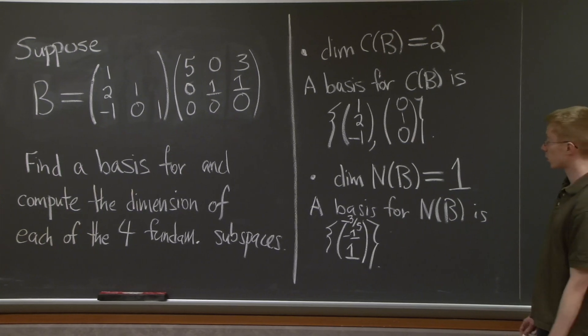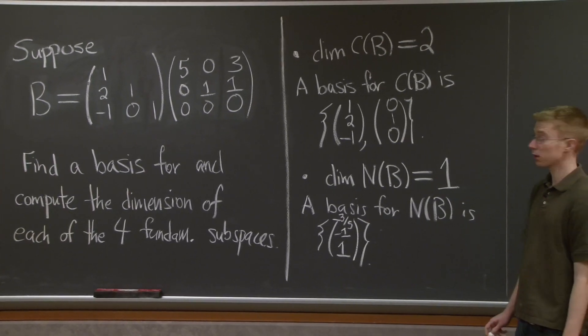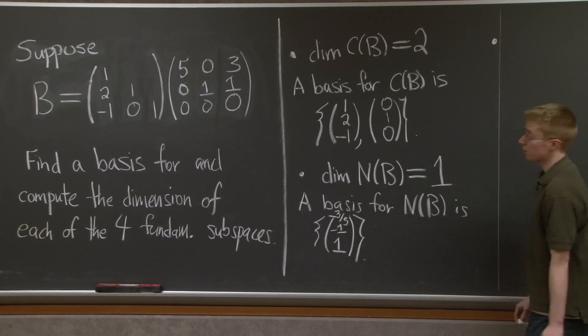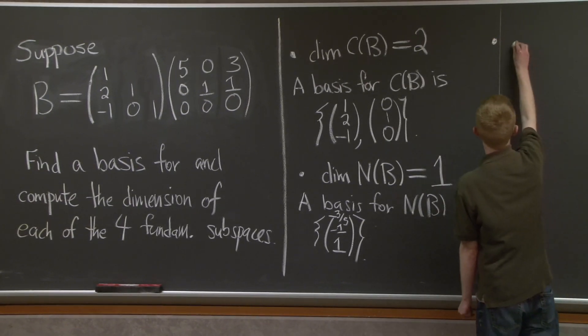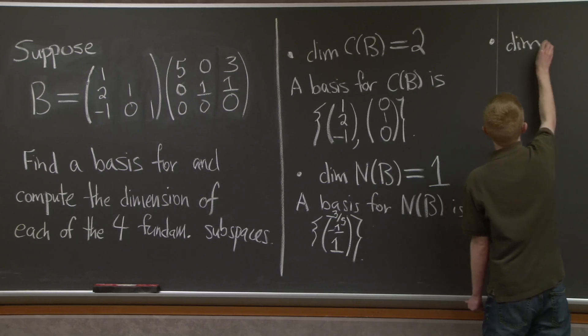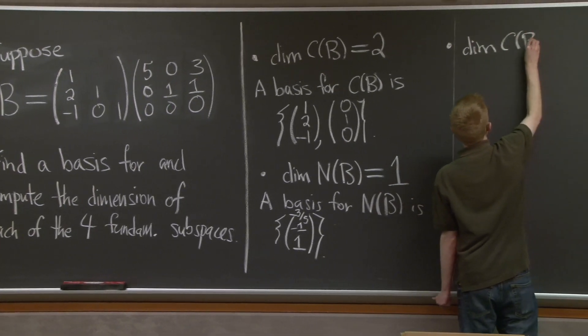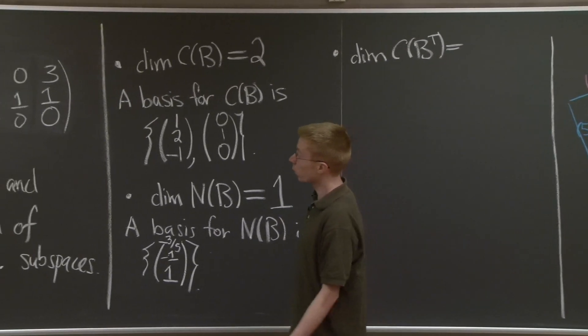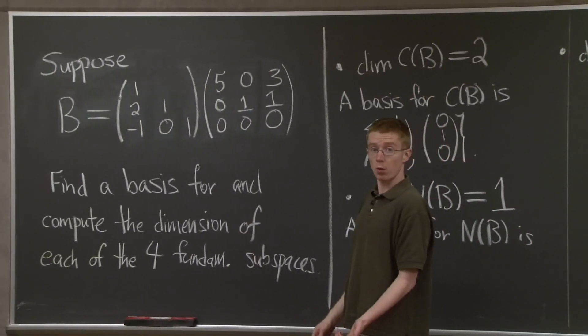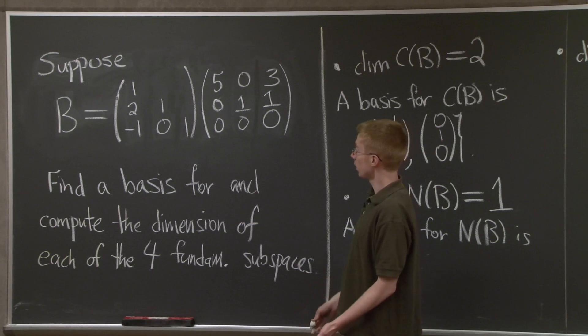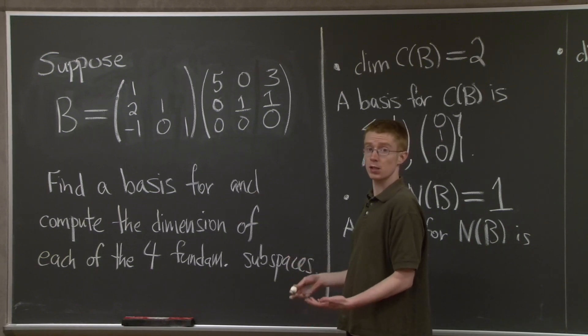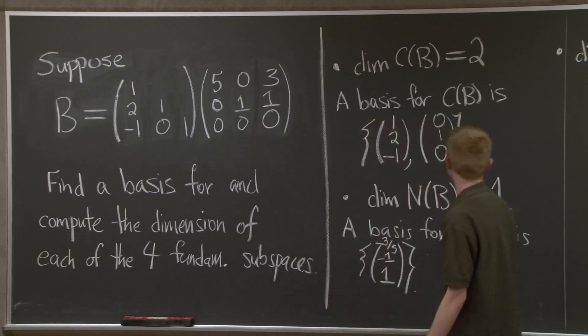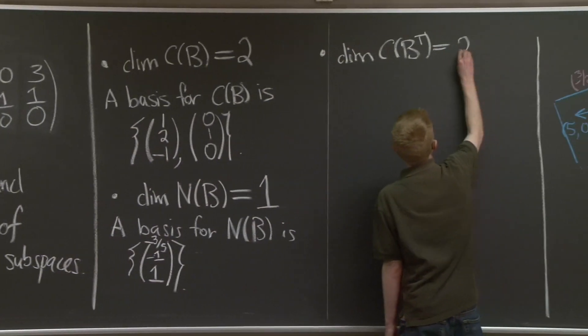Now, let's move on next to the row space. How do we find the dimension of the row space? I'm going to write row space as column space of B transpose. Remember that one of our big facts in this class is that the dimension of the row space is the same as the dimension of the column space. It's just the number of pivots. So it's 2.